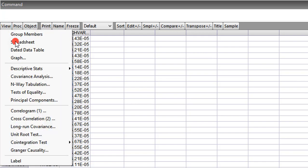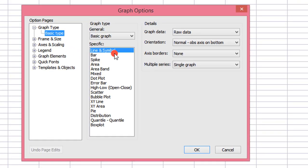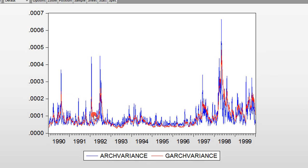I click on View. I go to Graph. I have line and symbol. I'm not changing that. I click OK. So we can see here that the ARCH Variance and GARCH Variance series are exactly the same.